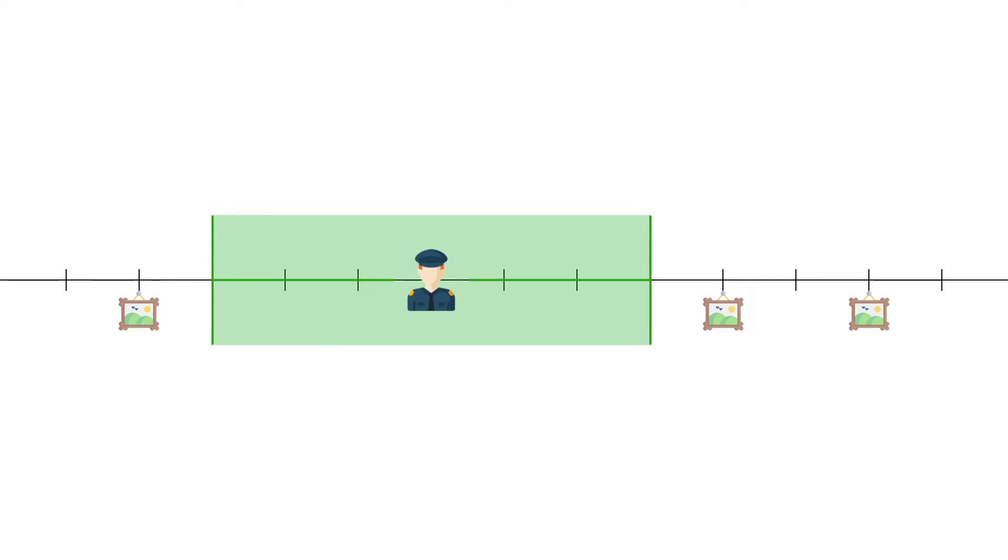These guards have a certain purview that they can see. For example, here we have a guard who can see three units to the left and three units to the right. We are given this number k - every guard can see k units to the left and k units to the right from where he is positioned. When you place a guard at the origin, you protect the locations 0, ±1, ±2, ±3.